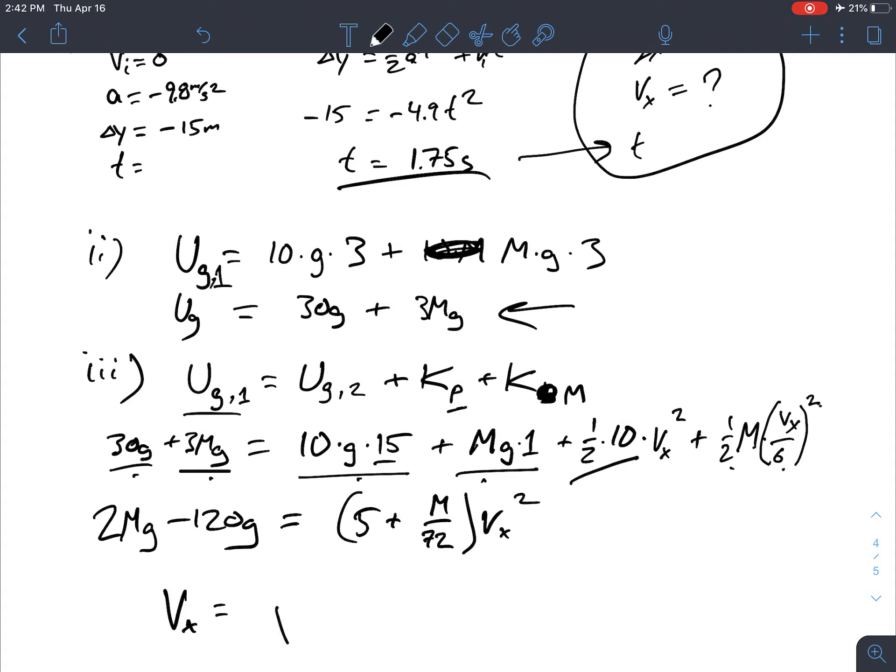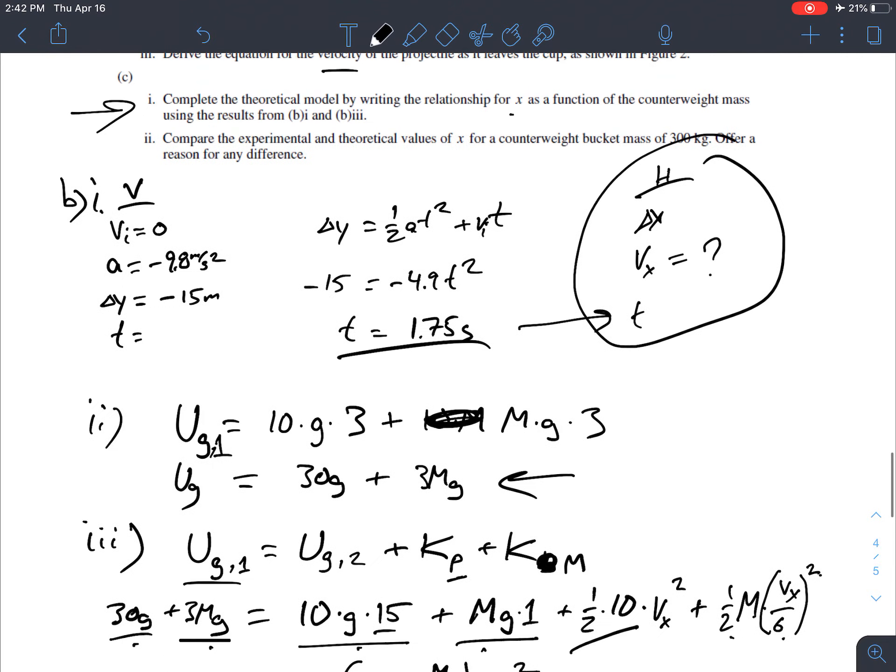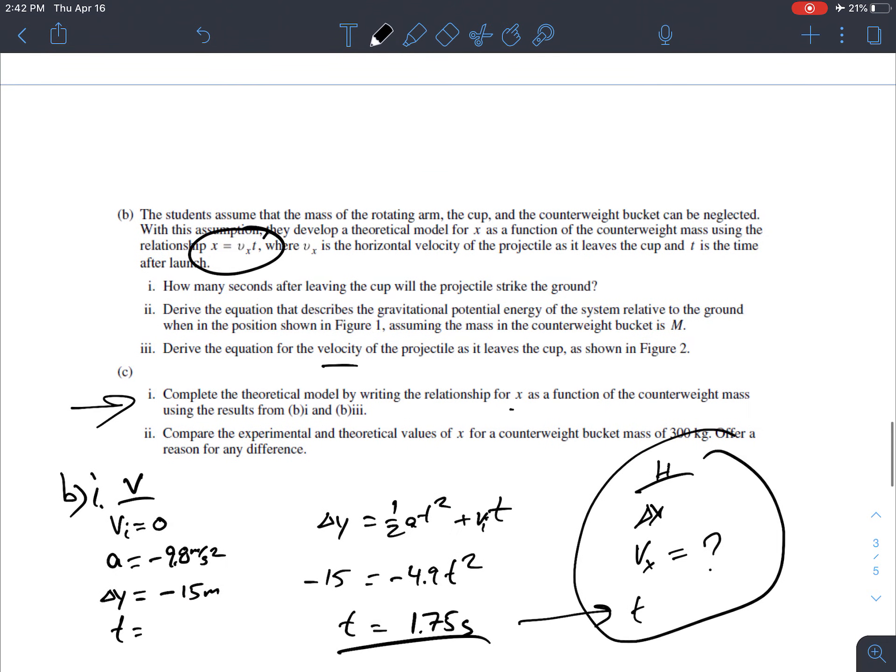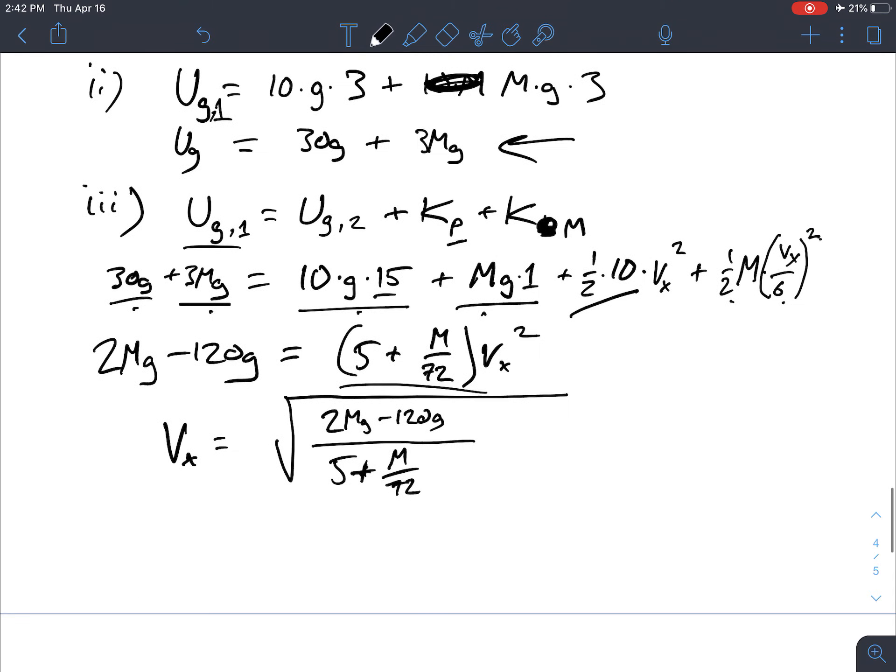I got that, so that takes care of these four terms. And then on this side I've got, let's see, 5vx squared, and then I've got one, I've got M over 72 vx squared. So I've got 5 plus M over 6 squared is 36, times over 72, M over 72, M over 72 vx squared.